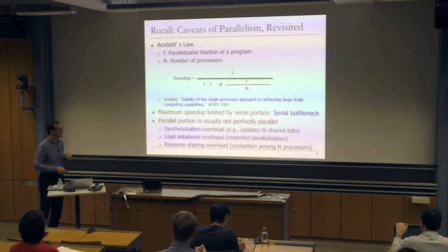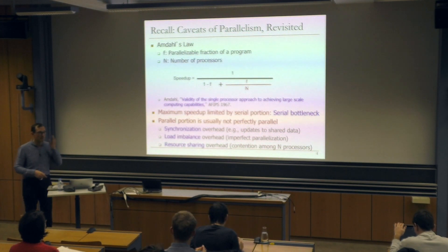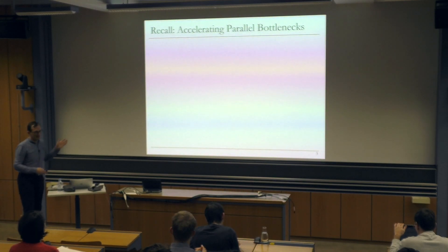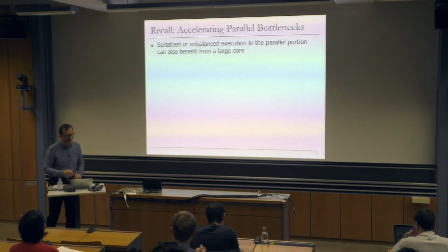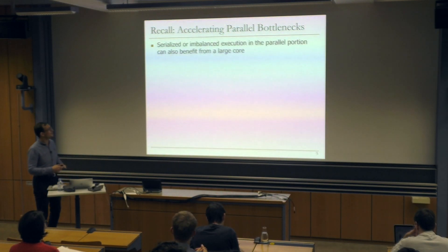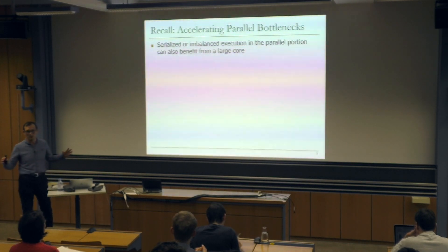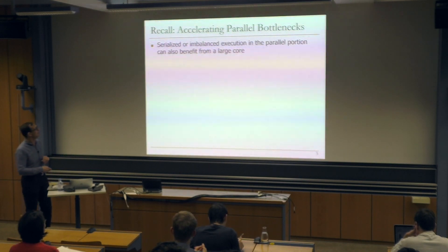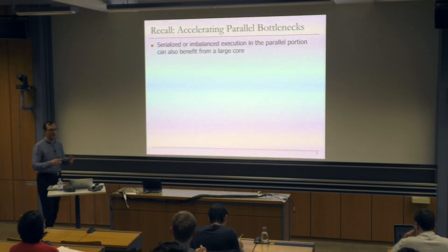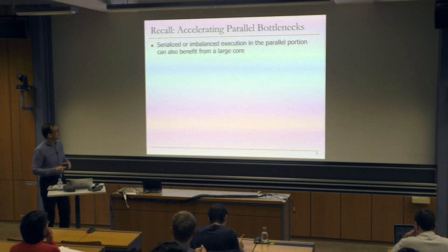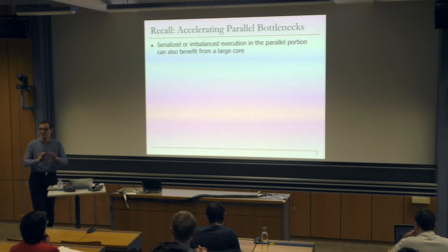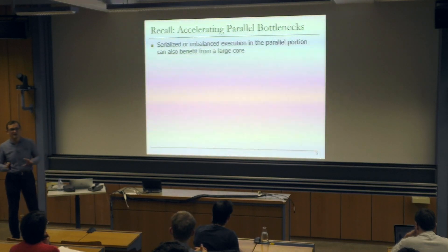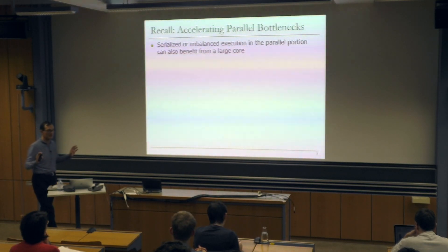We already saw one example from MySQL yesterday. We have serialized or imbalanced execution in the parallel portion of a program, and this could also benefit from a large core. In the extreme form of heterogeneity, you would map different types of critical sections to different cores that can execute those critical sections in the best way. A large core is not necessarily the most efficient — ideally you would bake in that code into an ASIC — but we're going to specialize the core for execution of different types of code.